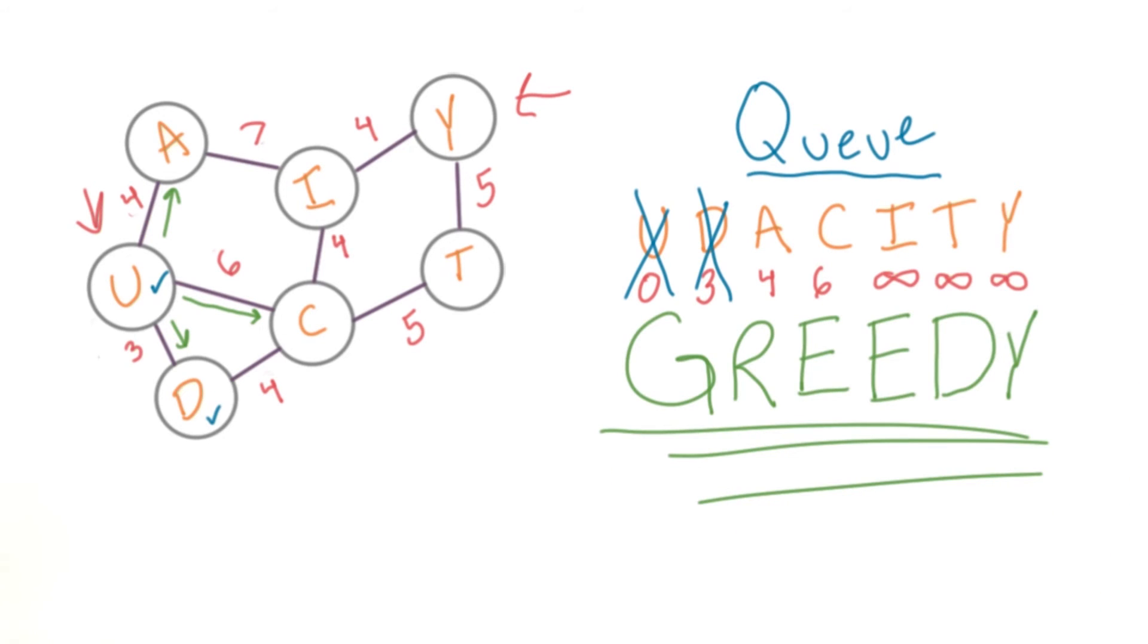Because we always pick the node with the lowest distance, Dijkstra's is often called a greedy algorithm. The philosophy for this class of algorithms is pick whatever option looks best at the moment, hence the name greedy.